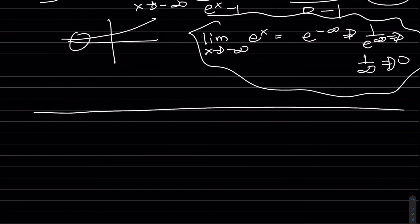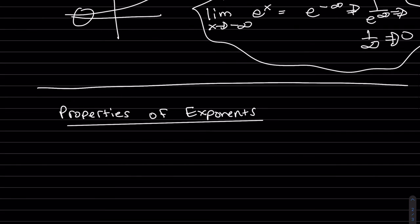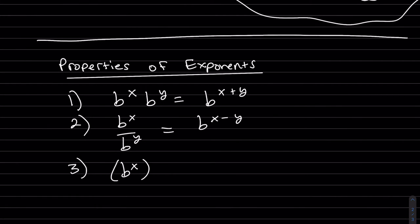A couple more things. I do want us to write out the properties. This is a review. We'll need these in the coming up chapters. You have two numbers, the same base being multiplied. You can add the exponents. When you're dividing, you subtract. Power raised to power, you multiply.